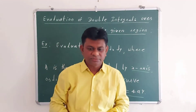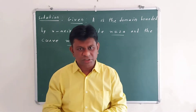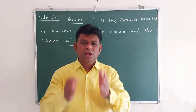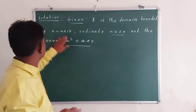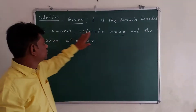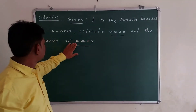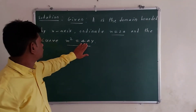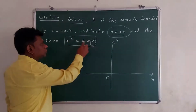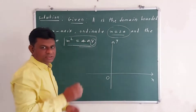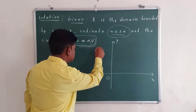Solution: First, we draw the region of integration. The region of integration is bounded by the X axis, the ordinate X equal to 2A, and the curve X² = 4AY. Now, X² = 4AY is a parabola symmetrical about the Y axis.